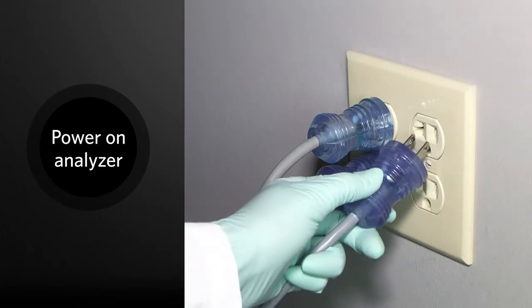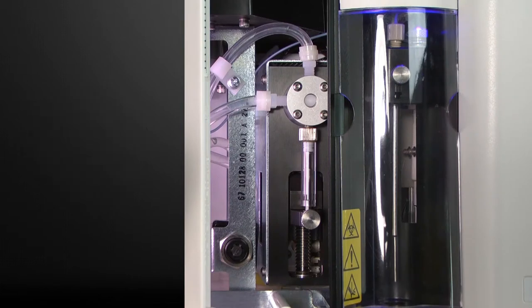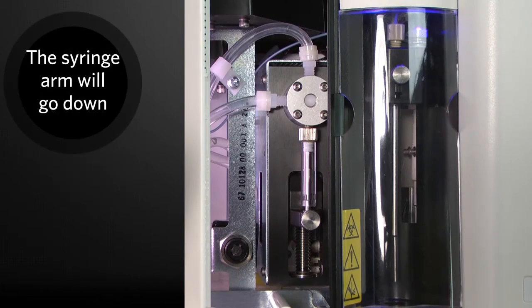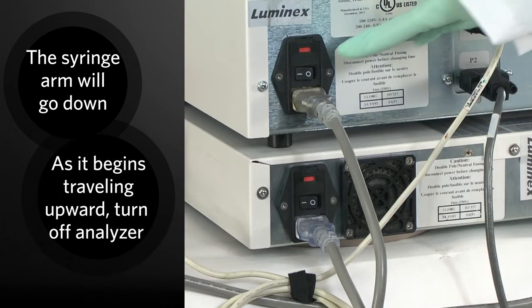Plug in the power cord. Turn on the analyzer and immediately watch the syringe pump. Within a few seconds, the syringe arm will go down, then start going up again. As soon as it begins traveling upward, turn off the analyzer.